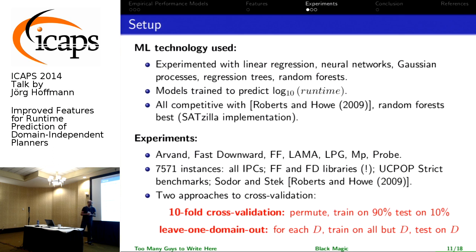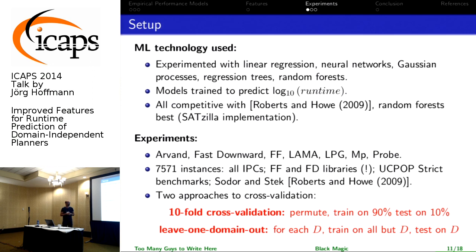Here's how they cross-validate. This is a standard approach in ML: you select your training and testing examples randomly — 90% training, 10% testing. Leave-one-domain-out is what we usually think about in planning regarding generalization: you learn on one domain and test on a different domain to see if knowledge learned transfers to new domains.